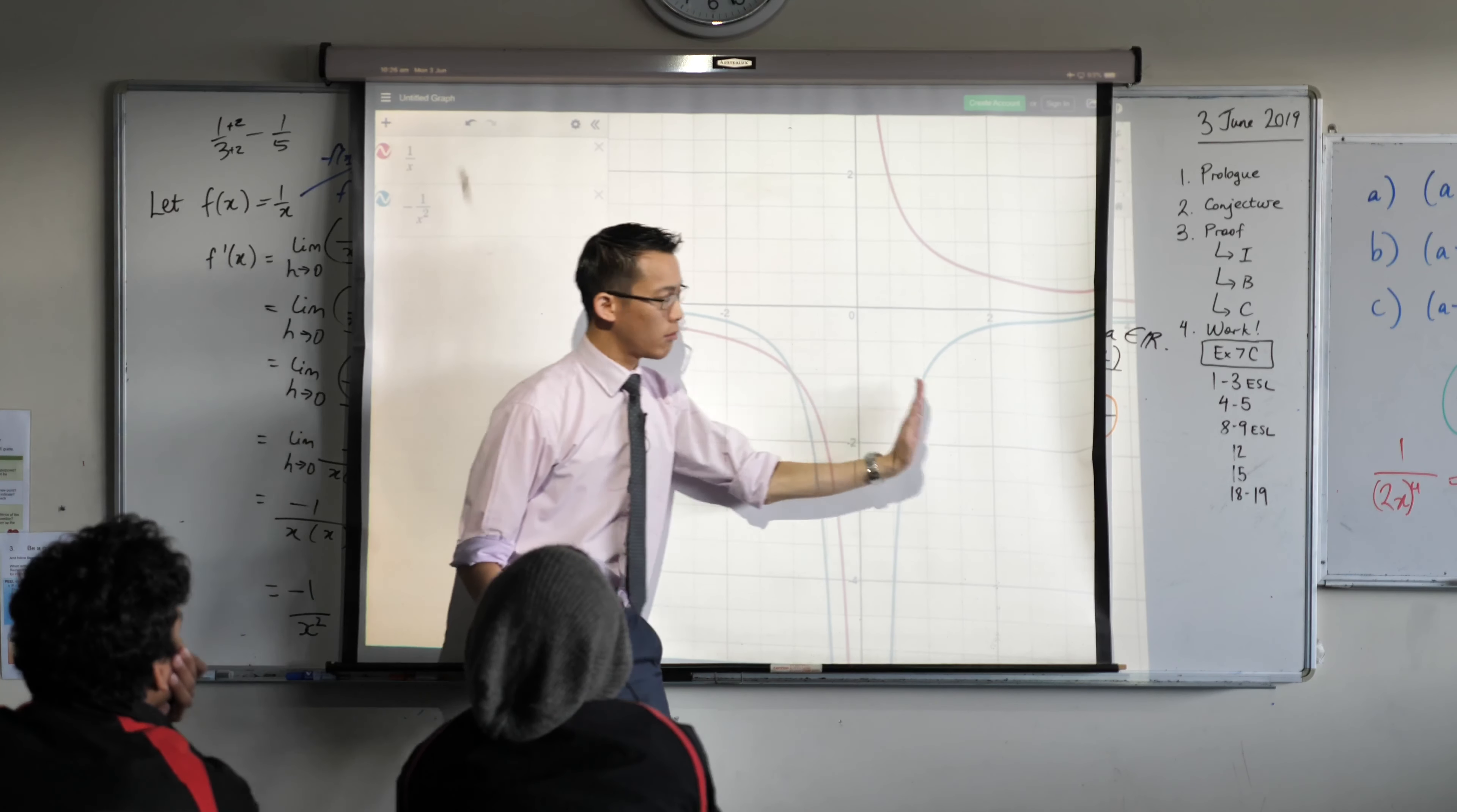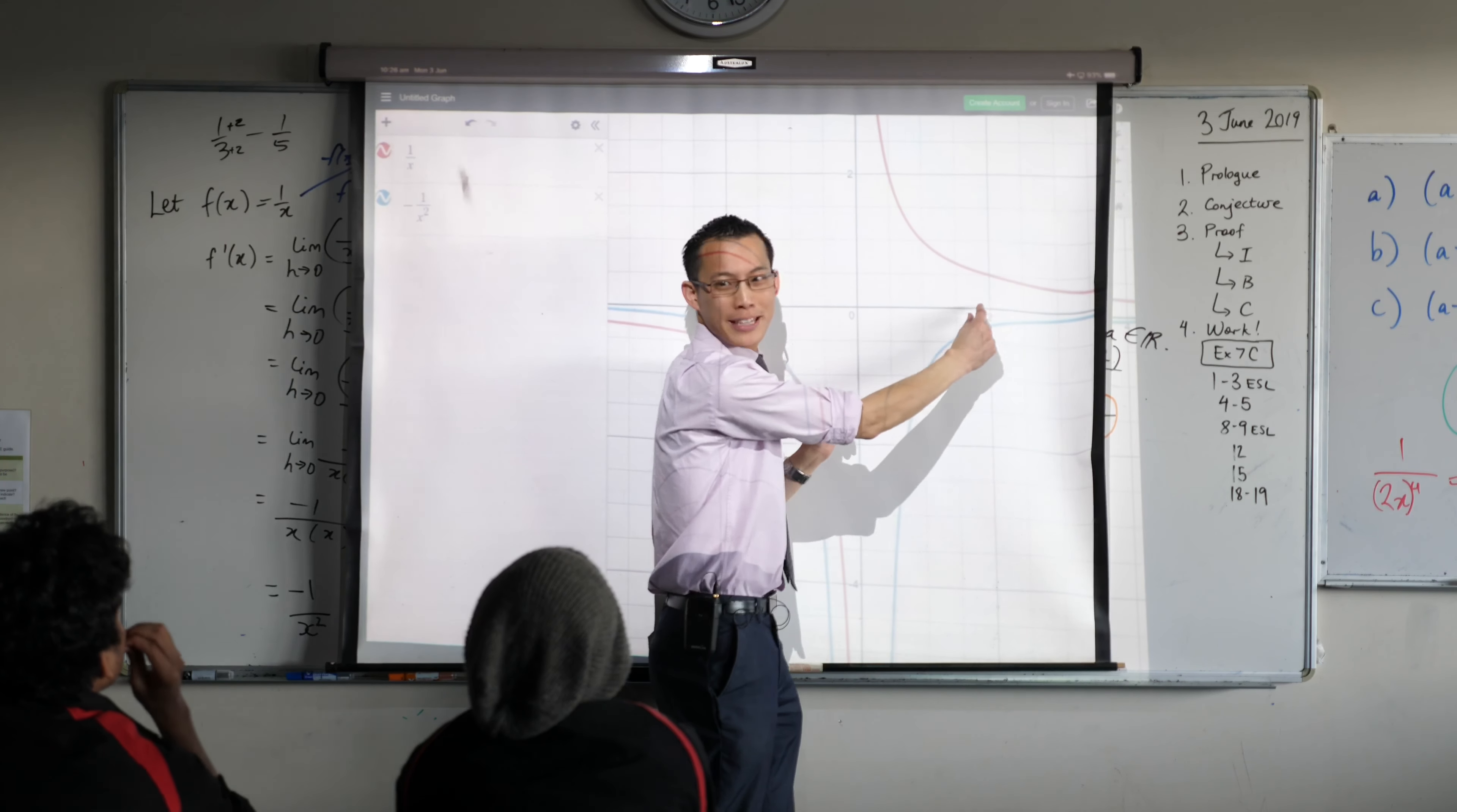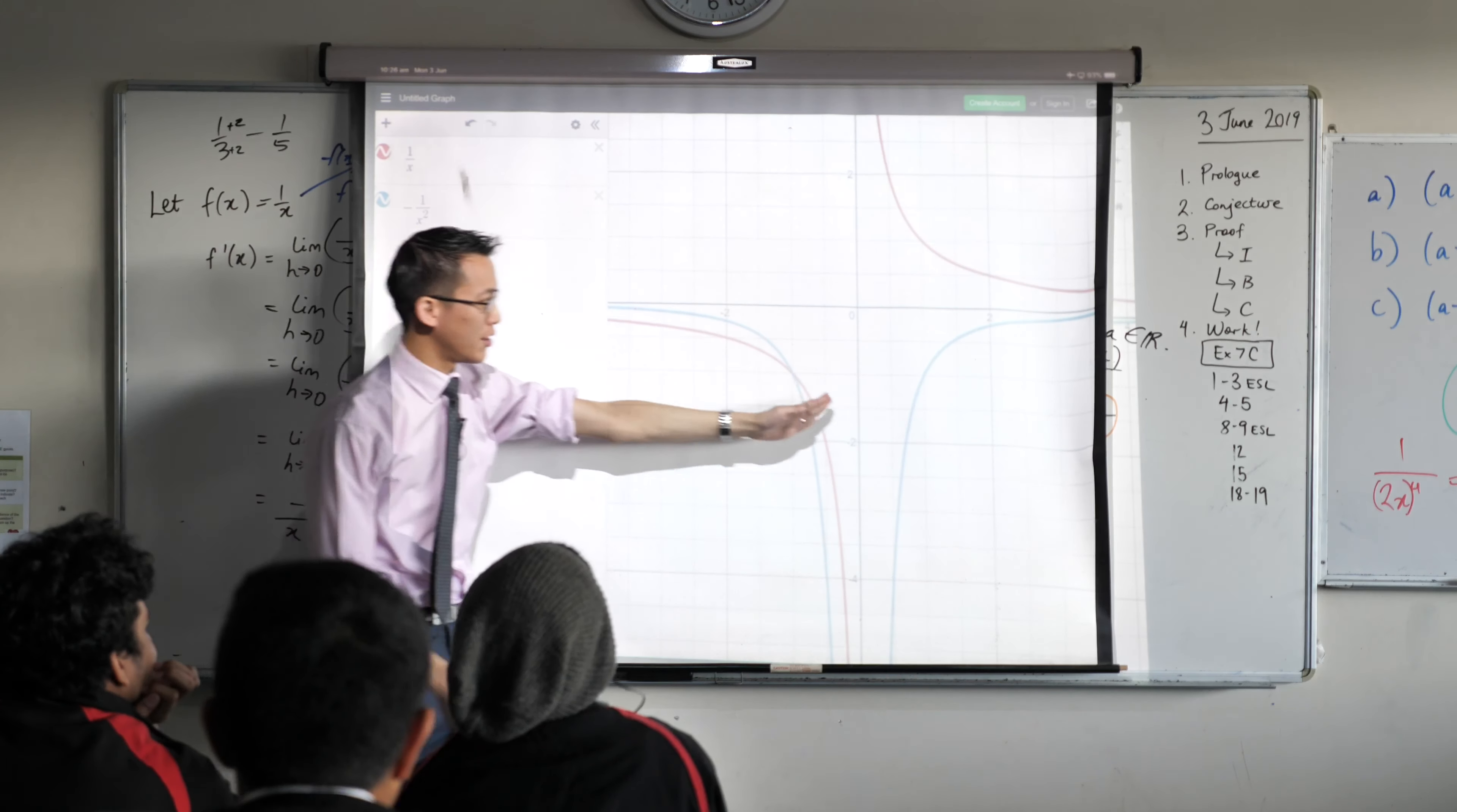What about over here? The gradient function starts really really negative because this guy is dropping like a rock, you see that? And then it's like I still stay negative but I'm not heaps negative, I'm just like a little bit negative. What does that mean? Over here it's just sort of gently going down. It's generally going down, never turns around though.